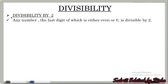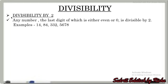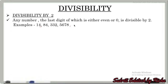As you all know, any number the last digit of which is either even or 0 is divisible by 2. For example, 14 is an even number and can be divided by 2. Numbers ending in 0, like 20 or 340, can also be divided by 2.